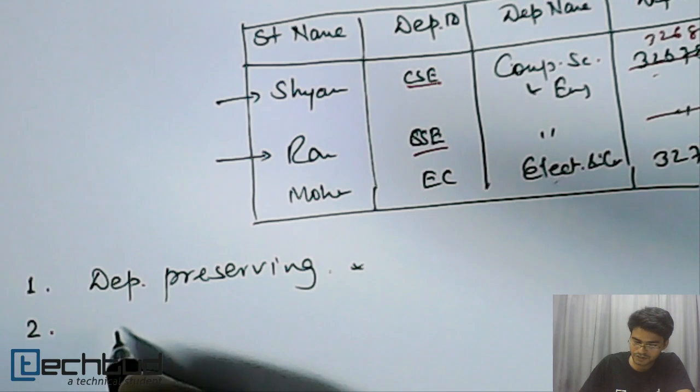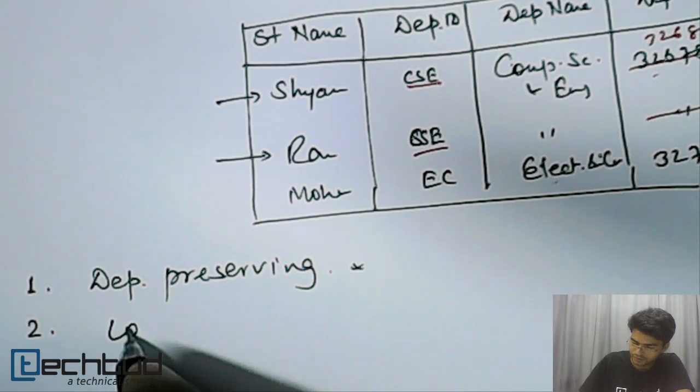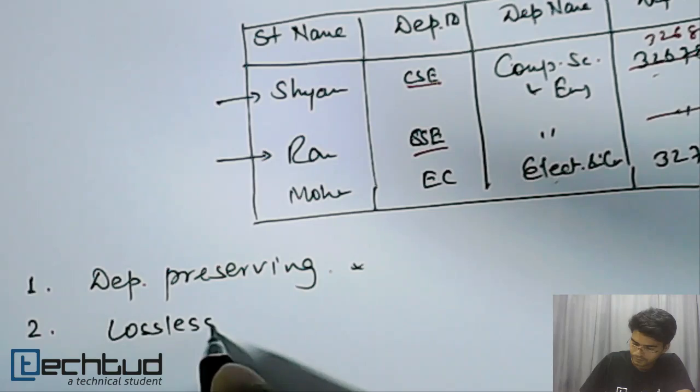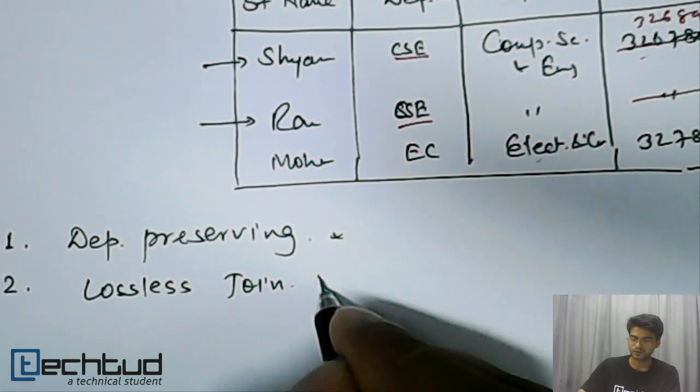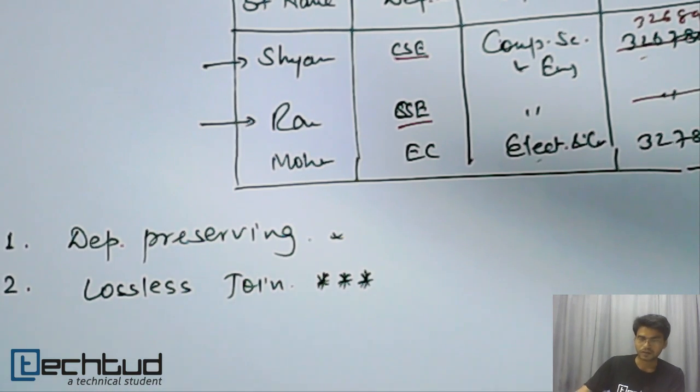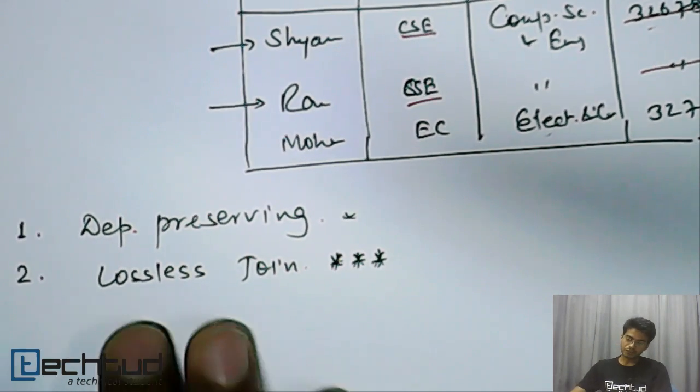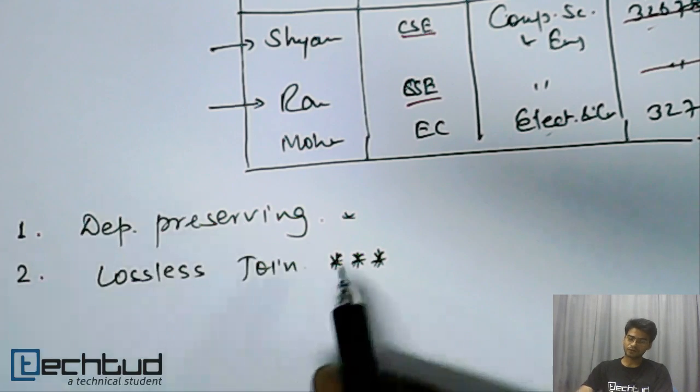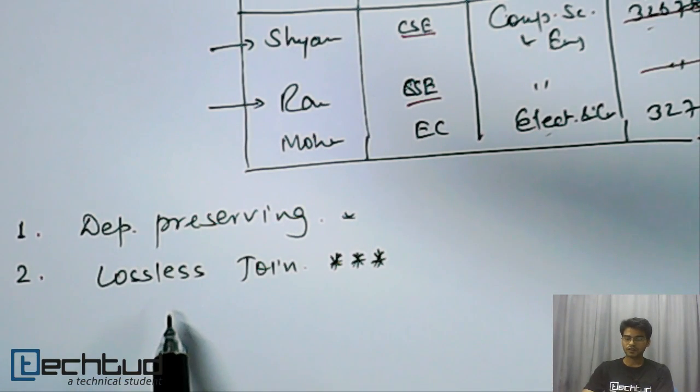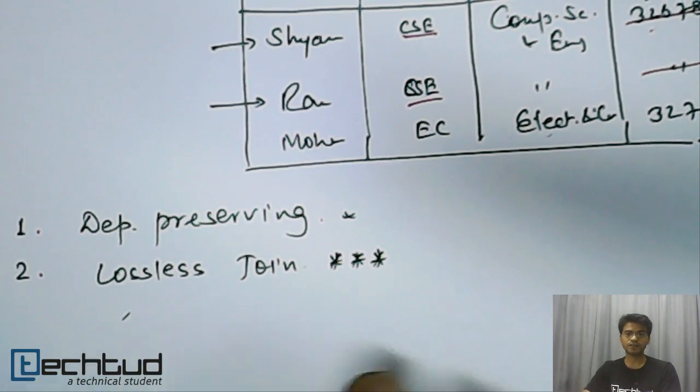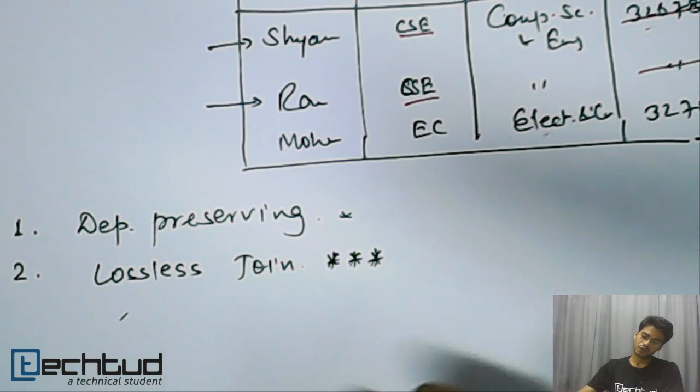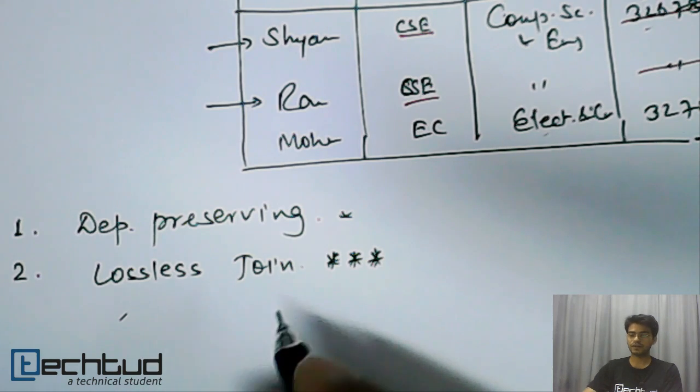The last one is lossless join. This is also related to decomposition and this is very very important. When we go for normalization or decomposition we break table into multiple tables. In that case we should not lose any of the data. That is lossless join.